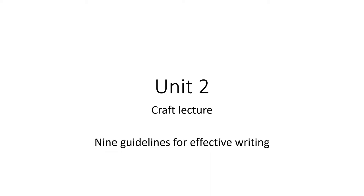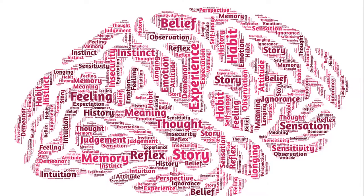Hello, this is the Craft Lecture for Unit 2, and it's about 9 Guidelines for Effective Writing. Language, like the brain itself, is infinitely complex. Any given idea that you can articulate in English or any other language can conceivably be reworded in millions of different ways. Each of these different possible expressions may communicate the same basic message, but the way the message comes across will acquire new shades of meaning and novel rhetorical overtones in each case.